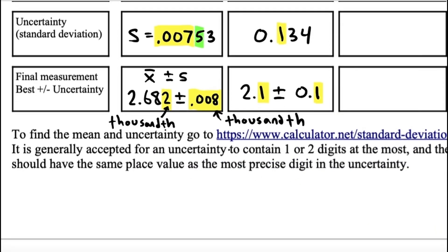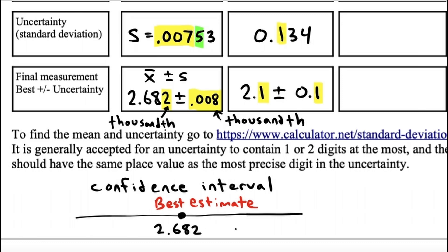So, the answer for this one would be 2.1 plus or minus 0.1. Saying that I'm not sure about the tenth digit. And it could be as small as 2.0 or perhaps as large as 2.2. We can also draw confidence intervals for our measurements.